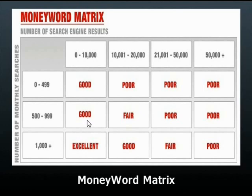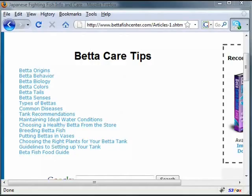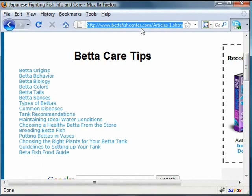You just match up the two and find out where the keyword falls. Of course, we want to find keywords that fall in the good or excellent categories and avoid the ones that fall in the poor and fair categories. Fair only if there are no good or excellent keywords available.